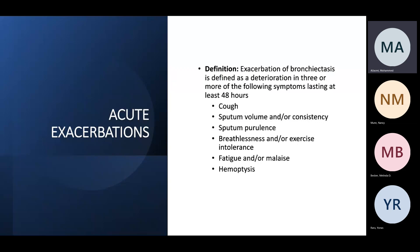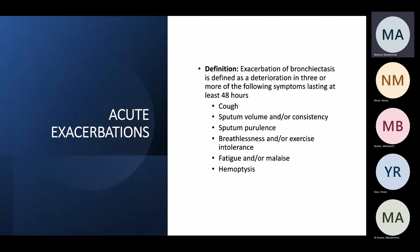Acute exacerbation: an exacerbation of bronchiectasis is defined as deterioration in three or more of the following for at least 48 hours — worsening cough, sputum volume, sputum purulence, shortness of breath or exercise intolerance, fatigue, or hemoptysis. When these criteria are met, we consider the patient to be in exacerbation.